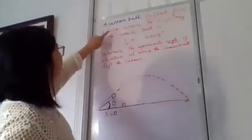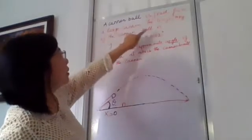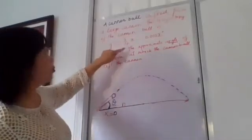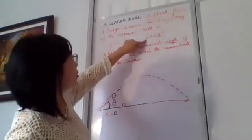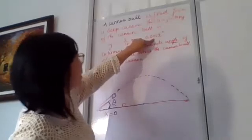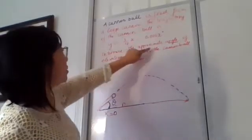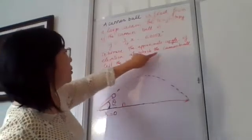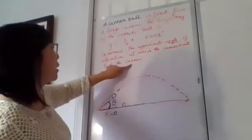A cannon ball is fired from a large cannon. The trajectory of the cannon ball is y equals 3 over 4 x minus 0.05 x squared. Determine the approximate angle of elevation at which the cannon ball left the cannon.